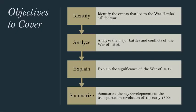Moreover, the British maintained alliances with Native American tribes in the Northwest Territory, arming and supporting them in resisting American expansion. These actions collectively outraged a group of young nationalist politicians known as the War Hawks, led by figures like Henry Clay and John Calhoun. They called for war as a means of defending American honor, protecting American interests, and expanding the nation's territory.